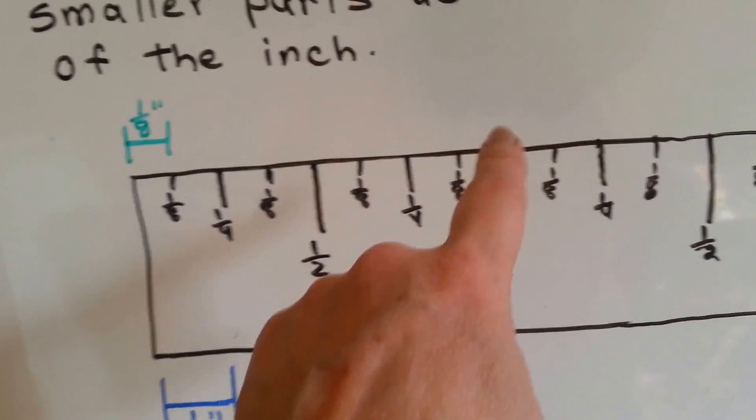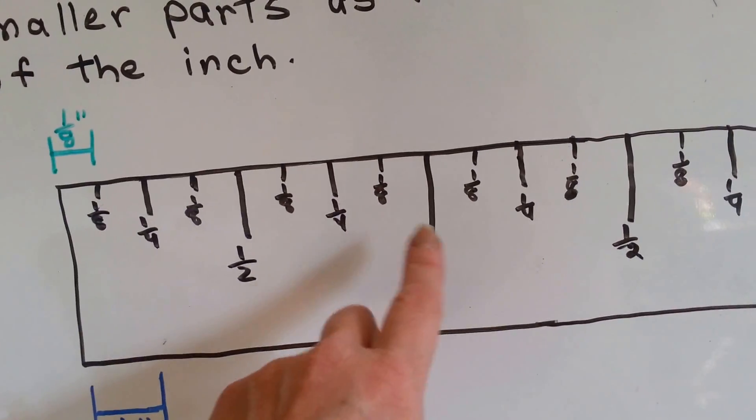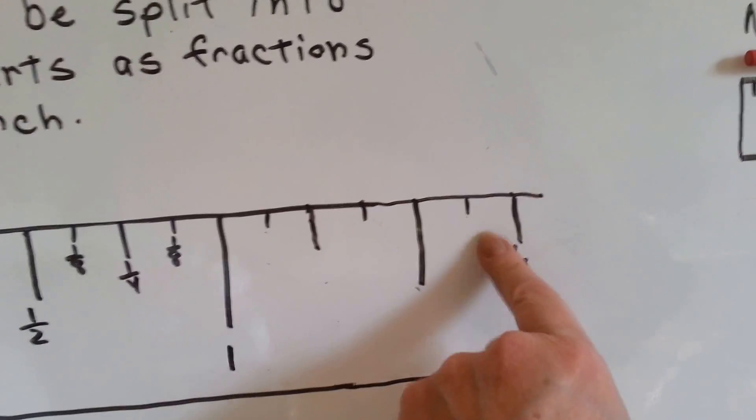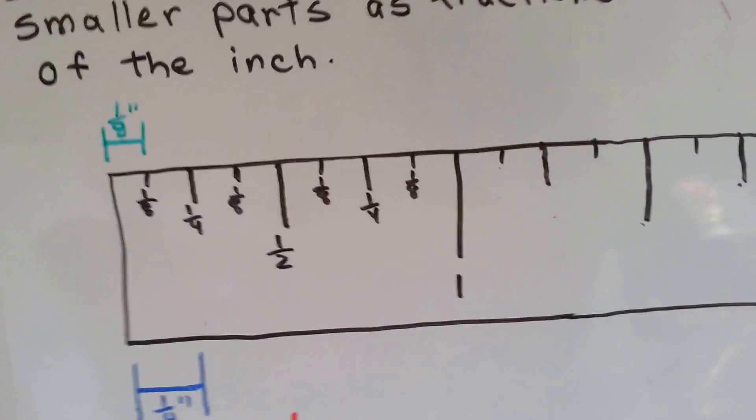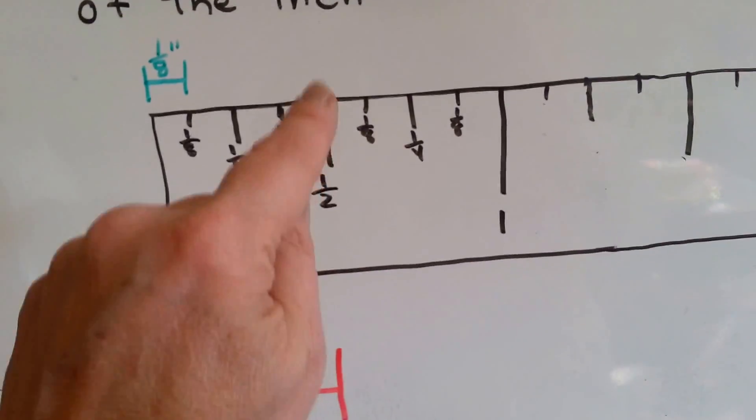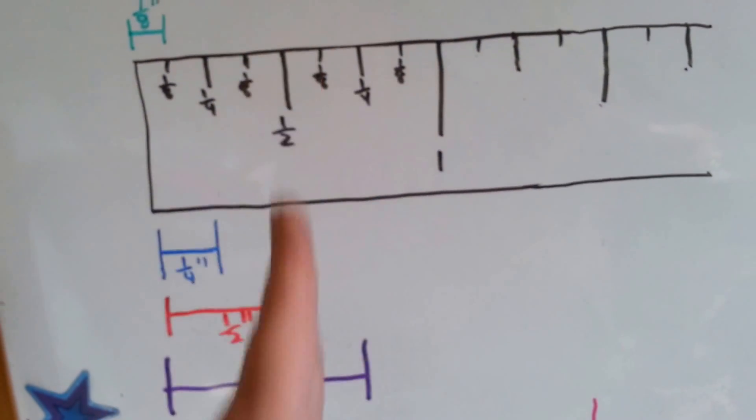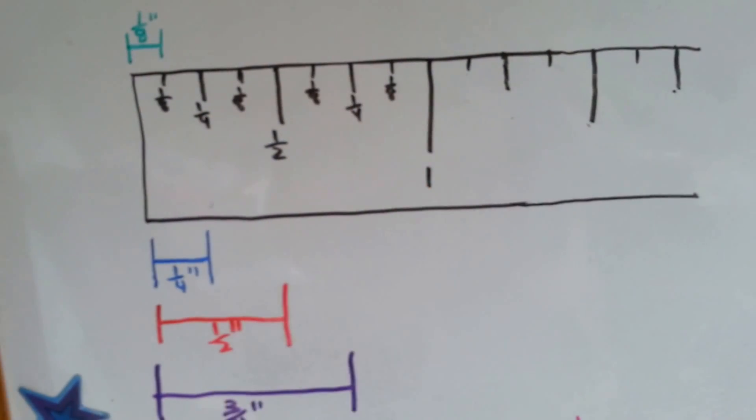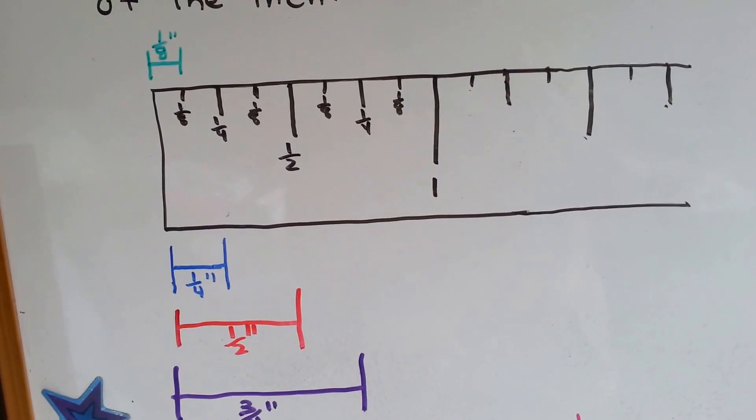The biggest line is the inch line, and that's where you're going to see a number. Normally on a ruler, you just see a one and then all these little lines. But this is what the lines mean. In between the zero and the one inch mark is a half inch. That's the red one here. There's two of them in the inch, half and half. Because remember in fractions, two halves make a whole one.